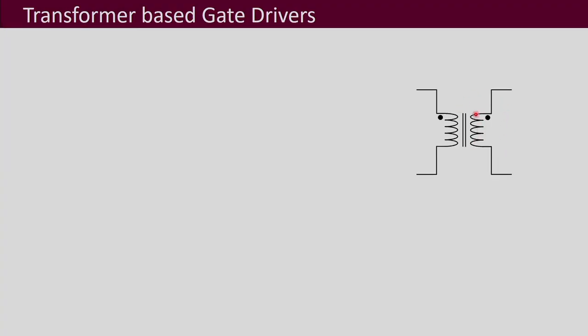You may be wondering why not use a transformer for gate drivers. Of course, it is used for gate drivers as well. Magnetic isolation gives you an inductive coupling between the input and output. In transformer based gate drivers, you will have a transformer where on the input side you give pulses, and on the output side you obtain pulses of similar nature — that is why this is also called a pulse transformer.